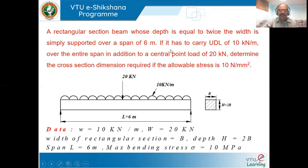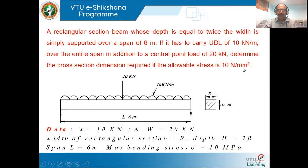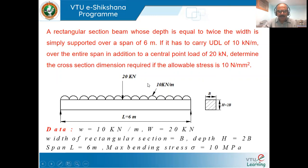The beam has to carry a uniformly distributed load of 10 kilonewtons per meter for the entire span, in addition to a central point load of 20 kilonewtons. We have to find the cross-sectional dimensions required if the allowable bending stress is 10 N/mm².